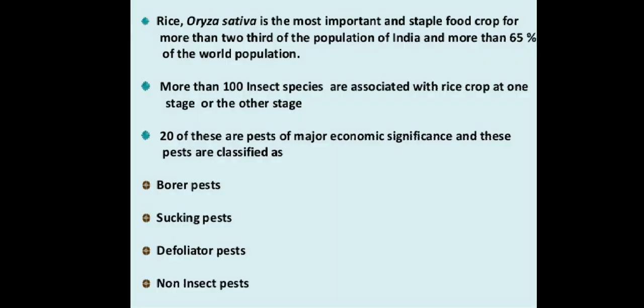The main crop among all others is rice. Oryza sativa is the most important and staple food crop for more than two-thirds of the population of India and more than 65% of the world population. More than 100 insect species are associated with rice crop at one stage or another. Twenty of these pests are of major economic significance and are classified as borer pests, sucking pests, defoliator pests, and non-insect pests.